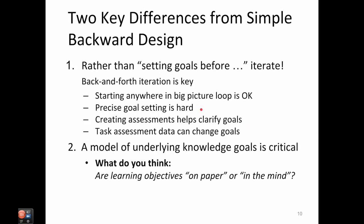Adding goals to an existing instructional design is another valid way to start. It is hard to do precise goal setting, and we'll talk more about how to do that. Creating assessments can help you clarify the goals — if you're having trouble precisely stating goals, go ahead and create some assessments and then come back and try to state the goals precisely. Assessment data can also change your goals; for example, you might find students struggling on something you didn't know was an issue, and add a new learning goal to address that struggle. A model of underlying knowledge is a critical piece of doing this in a rigorous and powerful way.